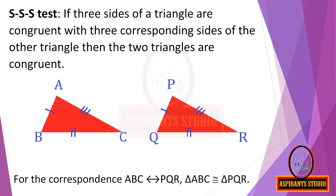Now coming to the SSS test — the SSS test for congruence of triangles. If three sides of a triangle are congruent with three corresponding sides of the other triangle, then the two triangles are congruent. Here we take the correspondence A corresponding to P, B corresponding to Q, and C corresponding to R, otherwise written as ABC corresponds to PQR. For this particular correspondence, triangle ABC corresponds to PQR.